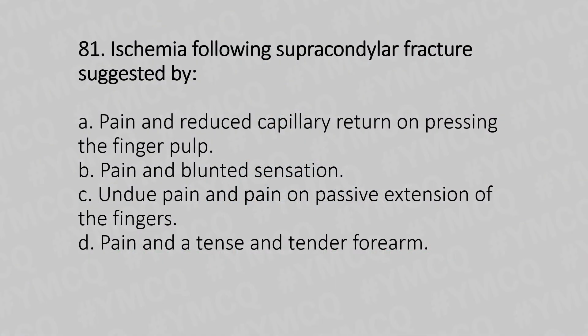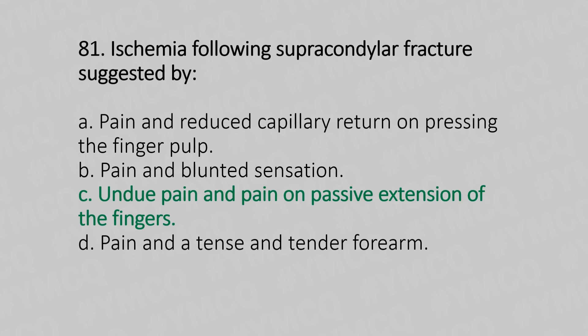Ischemia following supracondylar fracture is suggested by: Option A, pain and reduced capillary return on pressing the finger pulp. Option B, pain and blurred sensation. Option C, undue pain and pain on passive extension of the finger. Option D, pain and retender fora. The answer is Option C, undue pain and pain on passive extension of the fingers.